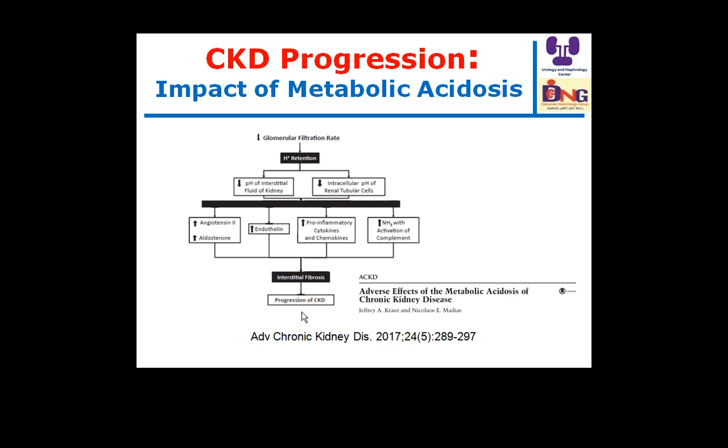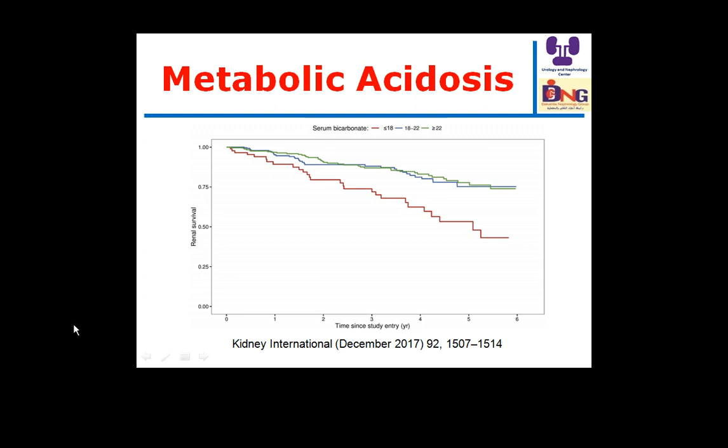In children, this study shows that the lower the serum bicarbonate — specifically if it is less than 18 — renal survival is significantly reduced. So metabolic acidosis in children is associated with progression of chronic kidney disease toward end-stage kidney disease.